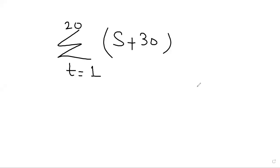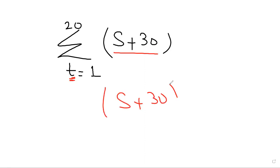The question in front of you is sigma t equals 1 till 20 of s plus 30. What will be the solution? The solution is very simple. As I discussed, there is no relation between t and s, which means s plus 30 will remain constant, and the maximum number — 20 — will multiply with it. This is the trick for how you solve this summation.